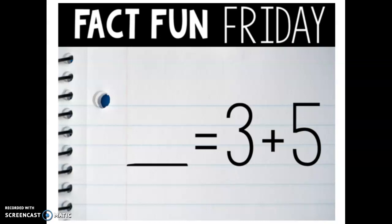So three. Draw three dots. One, two, three. Plus five. One, two, three, four, five. Add them together and that is one, two, three, four, five, six, seven, eight. So three plus five equals eight.